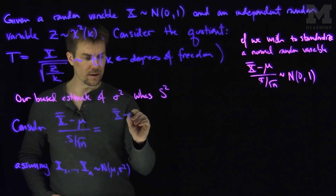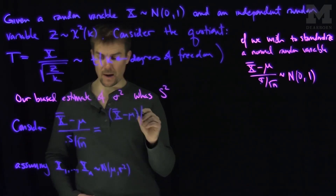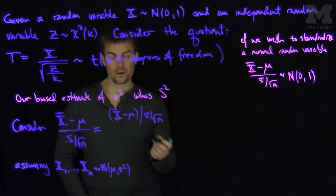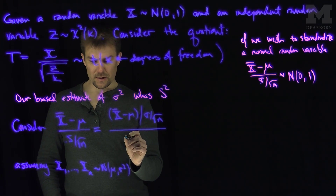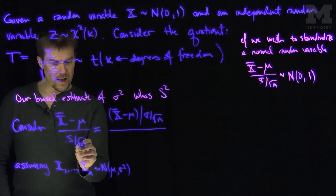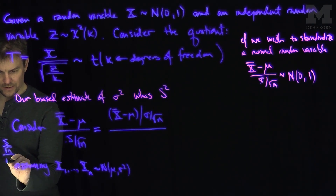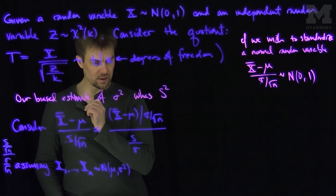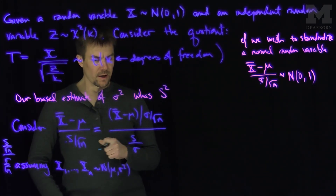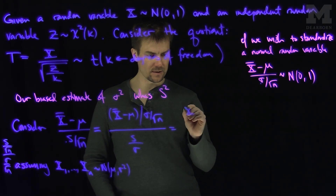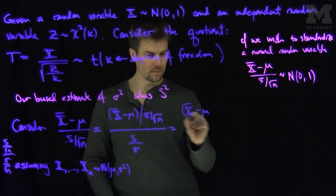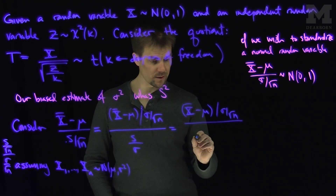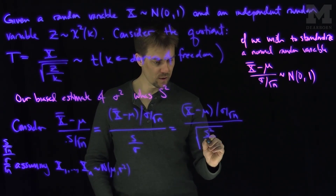I can look at x̄ minus mu divided by sigma over the square root of n — that makes the numerator a Normal(0,1) random variable. I should also divide the denominator by that, so I divide s over root n by sigma over root n, which is just s over sigma. This gives x̄ minus mu over sigma root n, all divided by the square root of s squared over sigma squared.